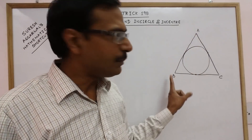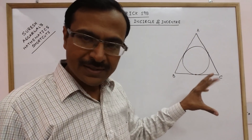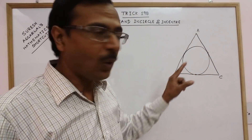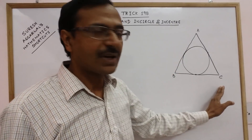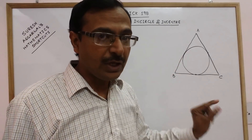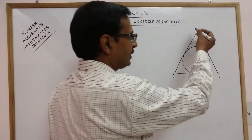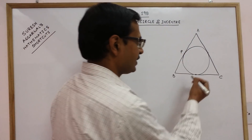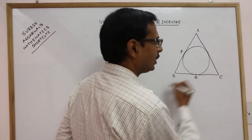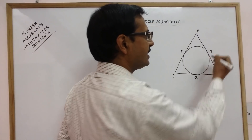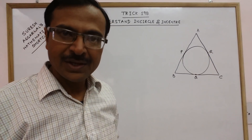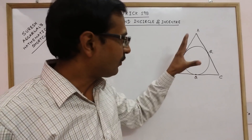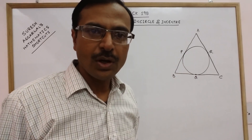In this figure you can see a triangle ABC and there is a circle which is touching all the three sides of this triangle ABC at a unique point. The side AB has a point of contact P with the circle, the side BC has a point of contact Q, and side AC has a point of contact R. This circle which touches the three sides of a triangle is called the incircle.